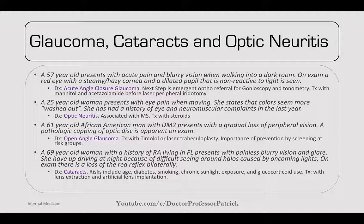A 25-year-old woman presents with eye pain when moving. Colors seem more washed out, and she has a history of eye and neuromuscular complaints. This is optic neuritis associated with MS. Treat with steroids. A 61-year-old African-American man with diabetes presents with gradual loss of peripheral vision. Pathologic cupping of the optic disc is apparent on exam — open-angle glaucoma. Treat with timolol or laser trabeculoplasty, and screen different risk groups.